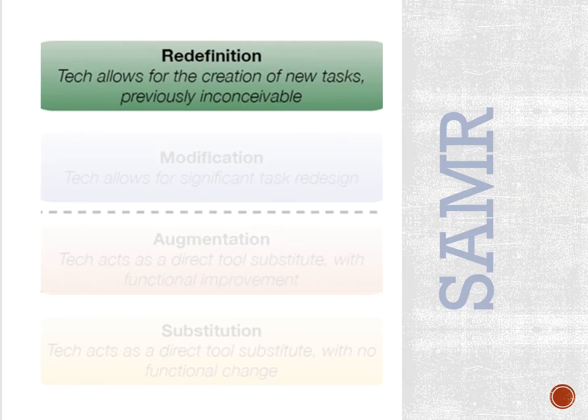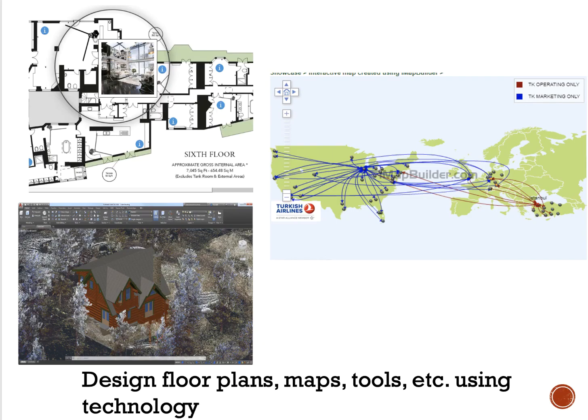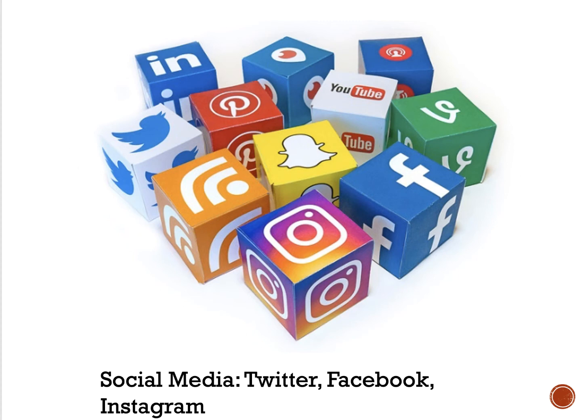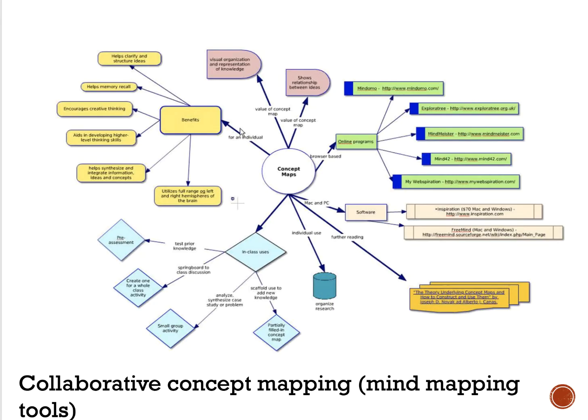The last level is redefinition. This is where the technology allows for the creation of new tasks that were previously inconceivable without technology. Some examples are designing floor plans, mapping things, designing different tools using technology, social media — using Twitter, Facebook, or Instagram for assessments or activities in your classroom — and collaborative concept mapping, where you use different mind mapping tools that students can work on together.